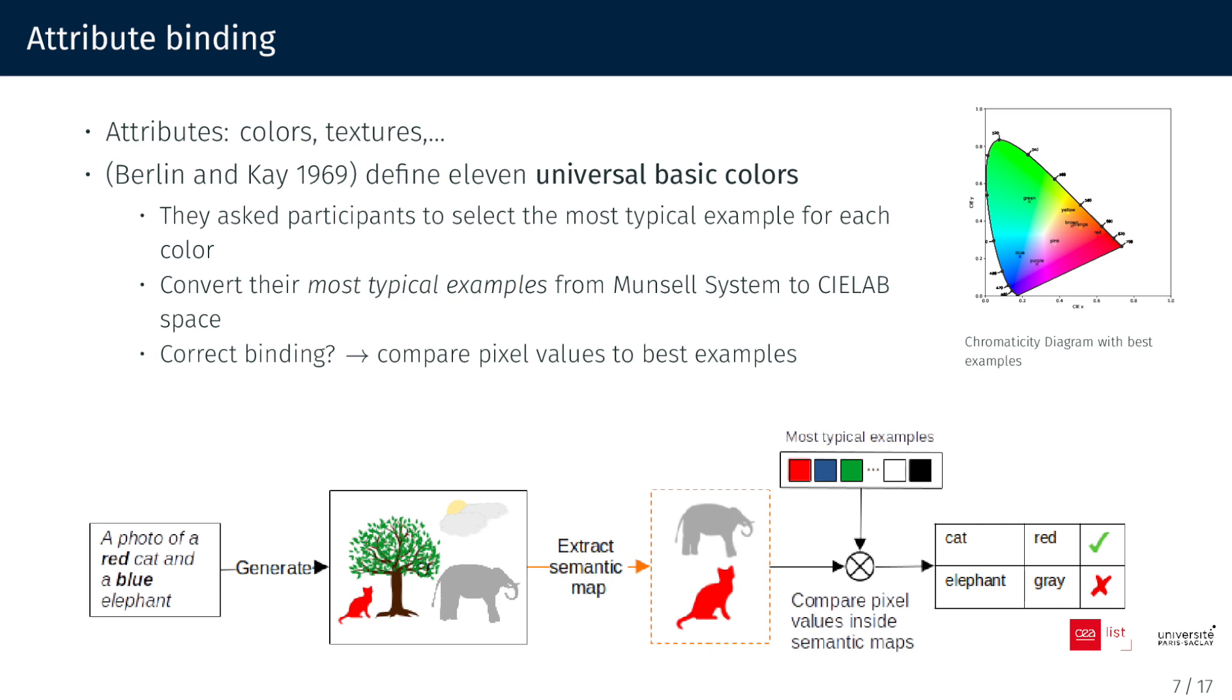It exists a multitude of attributes to specify an object. With TIAM, we focus on the 11 universal basic colors, determined by Berlin and Kay. Participants in their research selected the most typical example for each color, which we adopt as our reference colors. Our evaluation involves comparing the colors of detected objects, to ensure they align with the specified reference colors.